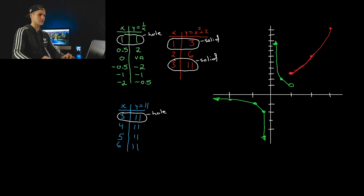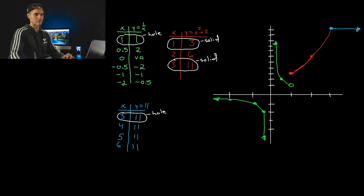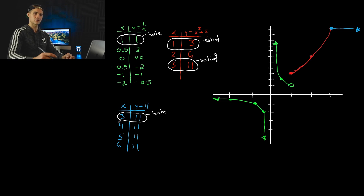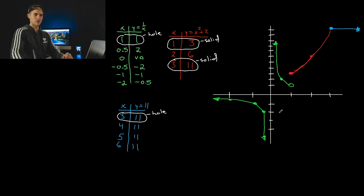After the quadratic, it's going to meet at that same point 3 and 11, and then it's just going to be a horizontal line going on to positive infinity. So that's basically how it looks: you've got the green reciprocal function, the red quadratic, and then the horizontal blue line.